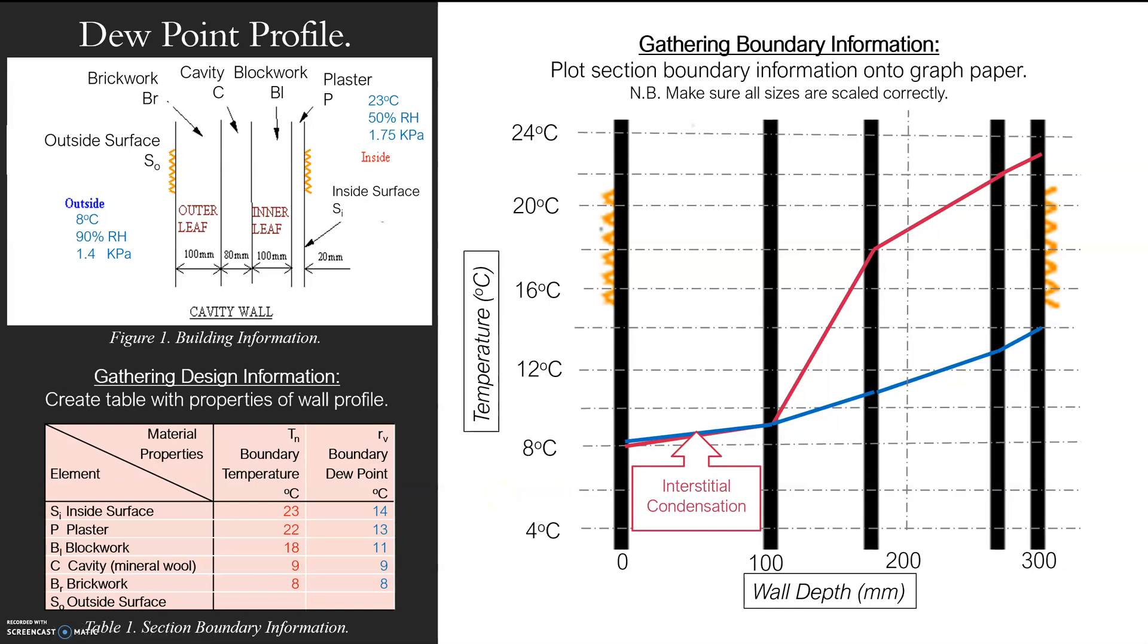This is where we are at 100% humidity, this is where there is no more, you can't contain any more water, so the water is then going to be visible. So this is where I would be worrying about condensation within my material. That's basically how you draw your profile.